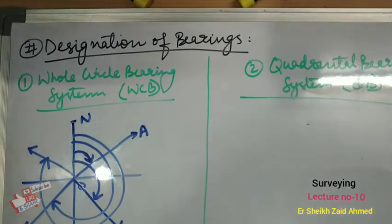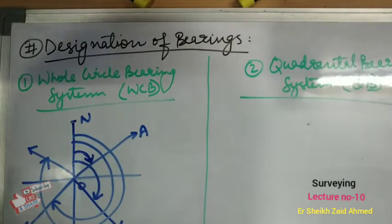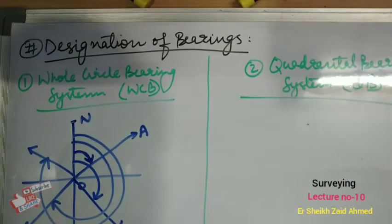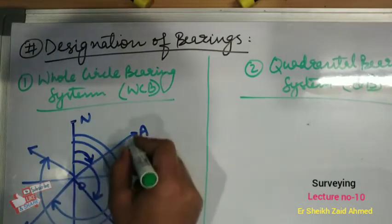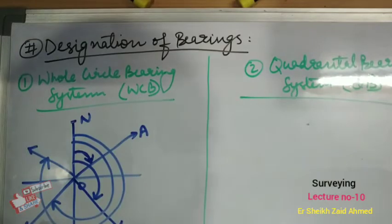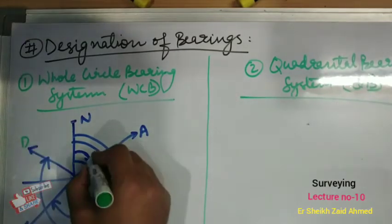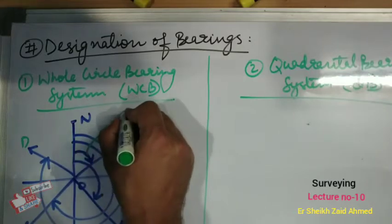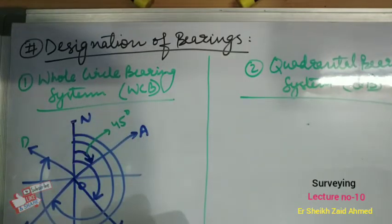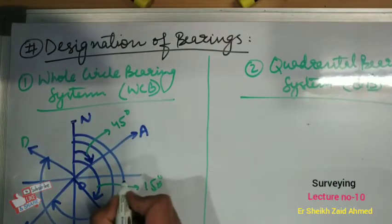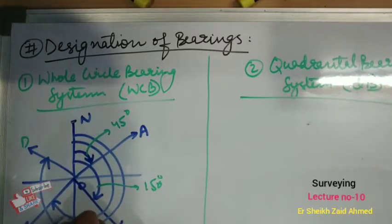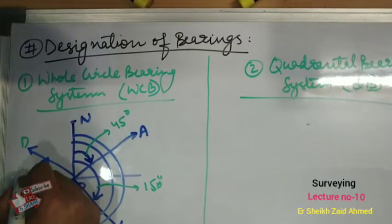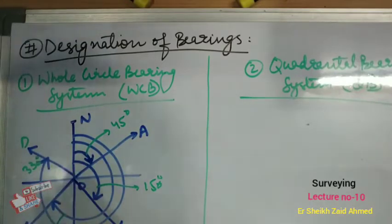The whole circle bearing of a line may vary from 0 degrees to 360 degrees. In this figure, if I designate the whole circle bearings of lines OA, OB, OC, OD: for line OA it is simply 45 degrees, for line OB it is 150 degrees, for line OC it is 240 degrees, and for line OD it is 330 degrees. So these are all whole circle bearings.